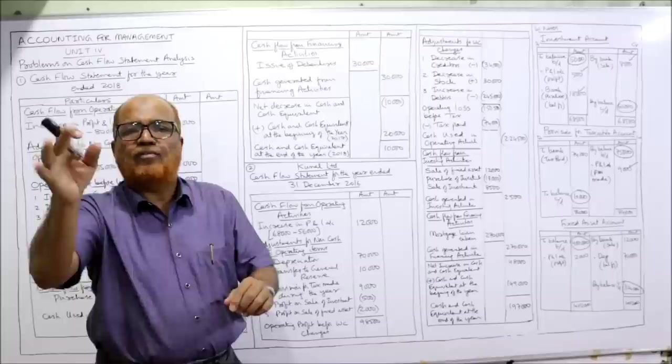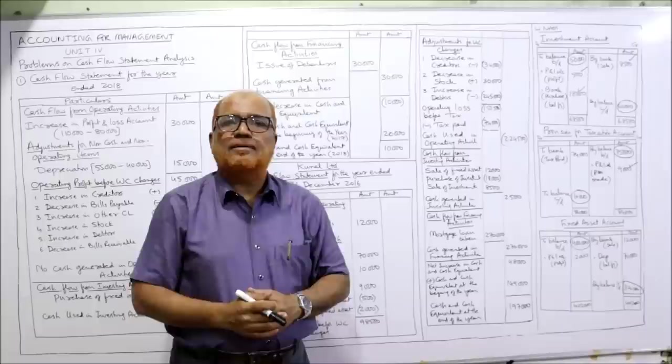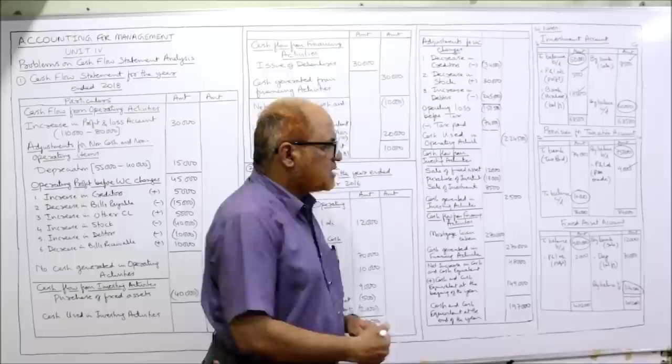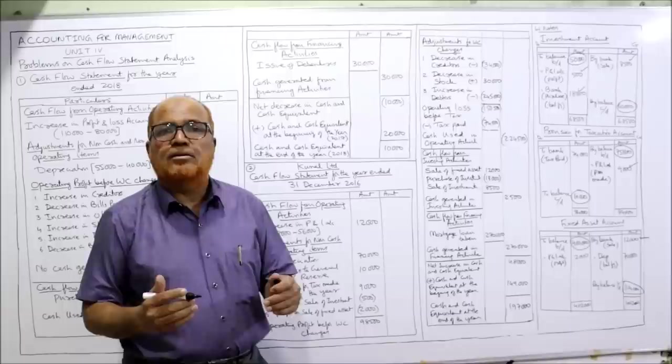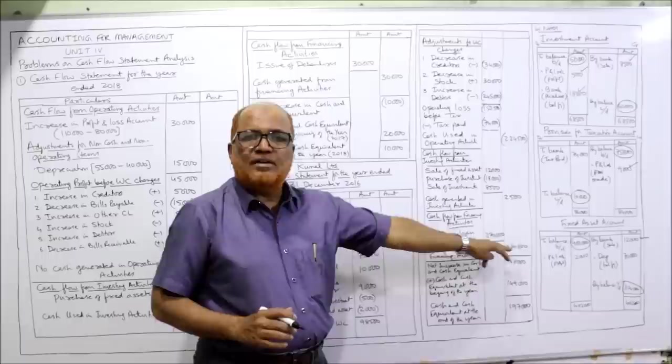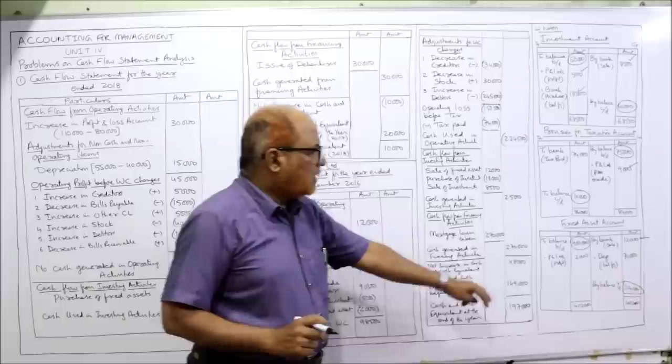During the year a part of the fixed asset costing 10,000 was sold for 12,000. When we sell the fixed asset, money comes in — bank account debit, fixed asset account credit. Credit side: by bank — sale 12,000. In that 12,000, 2,000 rupees is profit because 10,000 worth of fixed asset was sold for 12,000. That profit should be taken on the debit side. Entry: fixed asset account debit, profit and loss account credit.